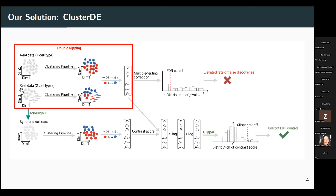In the second case, you have a real dataset with two cell types. Unfortunately, you don't know that, so you perform the clustering algorithm. Unfortunately, your clustering result does not perfectly recover the true cell types, but it reflects some variation in your data. For both cases, you will get anti-conservative p-values — meaning p-values smaller than they should be — and if you just apply standard multiple testing correction, you will get many false discoveries.